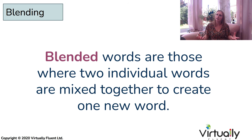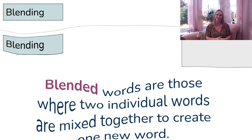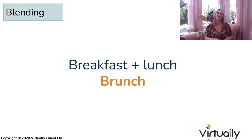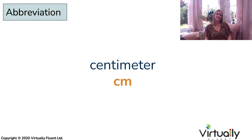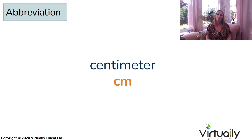We do have an official term for these — the portmanteau words — but 'blended words' is just fine. You may have heard of this example: 'brunch', which is a combination of breakfast and lunch. Next up, we're going to look at abbreviations, which are basically easy ways of saying something. We take a long word and reduce it down to a small word. You can see the example of 'centimetre', which is often written as 'CM'. This simply makes our lives a lot easier, and again, we have more and more of these in text language.